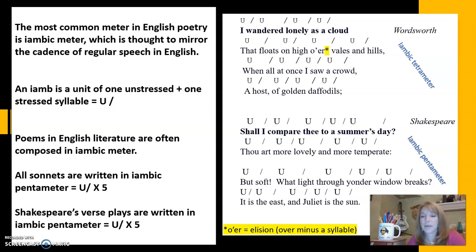And then at the very bottom, some very famous lines from the balcony scene of Romeo and Juliet, when Romeo says, But soft, what light through yonder window breaks? It is the east, and Juliet is the sun. Again, this speech is unrhymed for the most part, and so it is called blank verse.